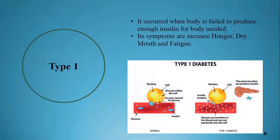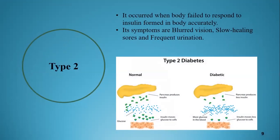There are two types of diabetes: type 1 and type 2. People with type 1 diabetes don't produce insulin — the body fails to produce enough insulin for its needs. Its symptoms include increased hunger, dry mouth, and fatigue. People with type 2 diabetes mostly don't respond to insulin properly and later often don't make enough insulin. Its symptoms include slow healing sores and frequent urination. Both types can lead to chronically high blood sugar levels.